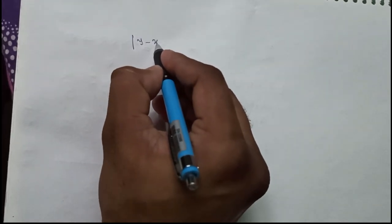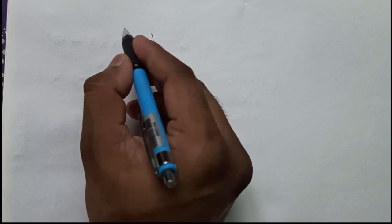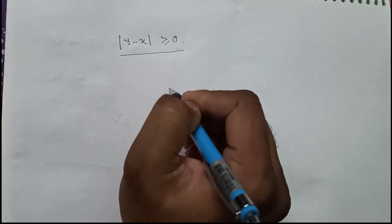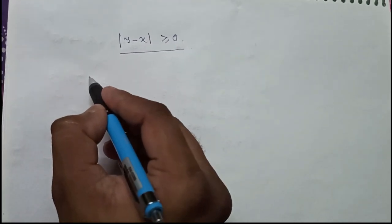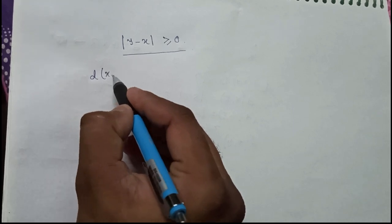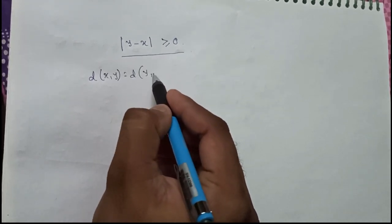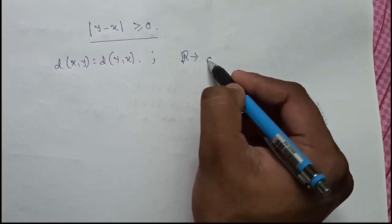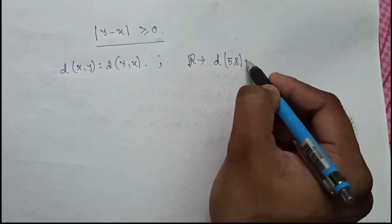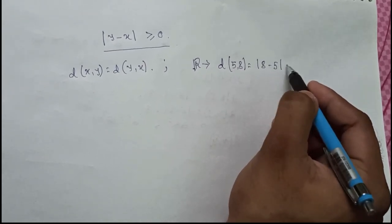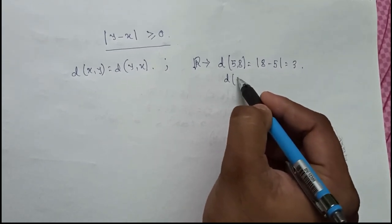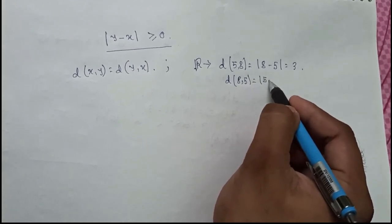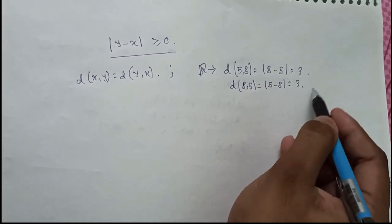From the properties of this mod function we know that it is always greater than or equal to zero. This is what we know obviously. And another thing, d of (x, y) is always d of (y, x). Like in case of R we can show that d of (5, 8) which is equal to |8 - 5| is equal to 3.